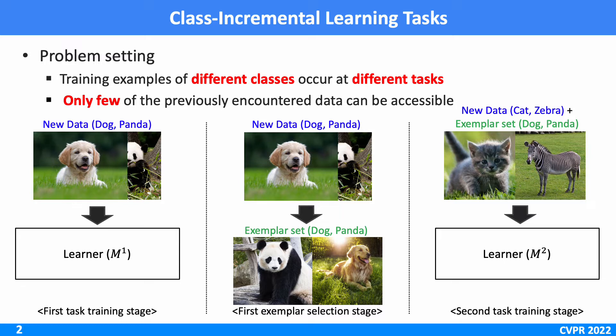Then, for the second task training stage, the model is trained with the exemplar sets and new data. In this online manner, the training and exemplar selection procedures are proceeding.